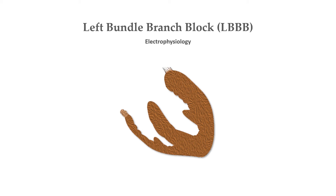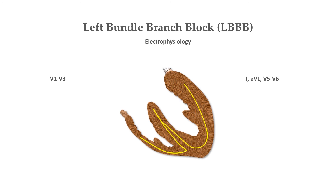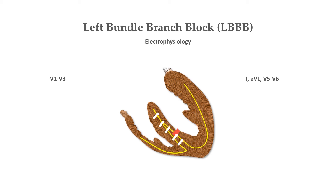Let's now talk about the electrophysiology — how these abnormal waves are produced in left bundle branch block. During normal cardiac conduction, cardiac impulses travel down the left and right bundles equally. The interventricular septum is activated from left to right, which leads to formation of small Q waves in lateral leads because the impulse is moving away from these leads. In left bundle branch block, there is conduction block or delay down the left bundle. So, the impulses travel first via the normal right bundle branch to the right ventricle, and then to the left ventricle via the septum. Since the septal activation is now reversed, this eliminates Q waves in the lateral leads.